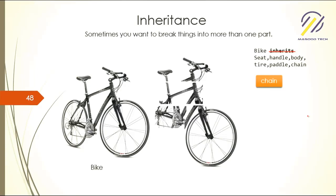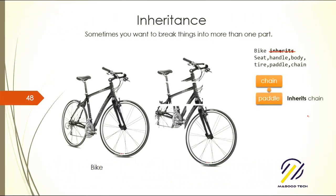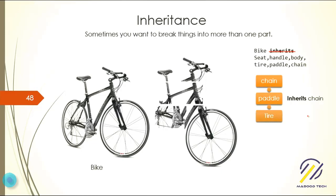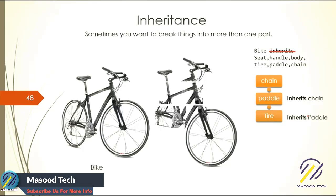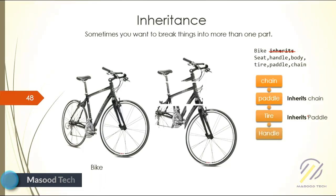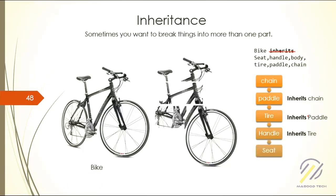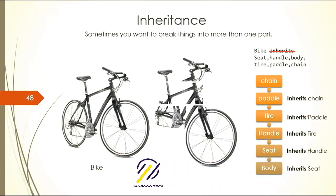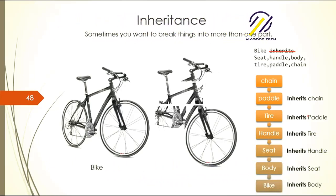So what can you do? If you really want to go with the class approach, you make a class of chain, then a class of pedal which inherits from chain — which is not very logical, but for the sake of the example we're assuming that's how it's done. Then we have tire inheriting from pedal, handle inheriting from tire, seat inheriting from handle, body inheriting from seat, and bike inheriting from body.